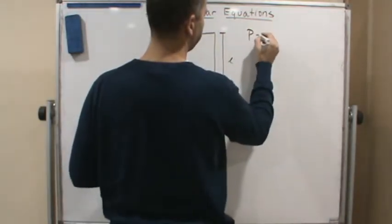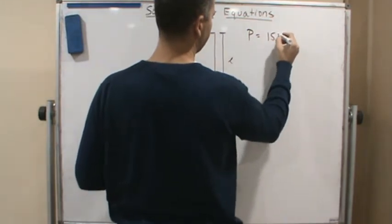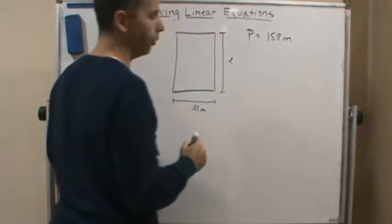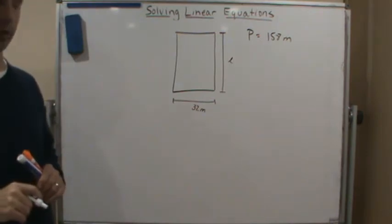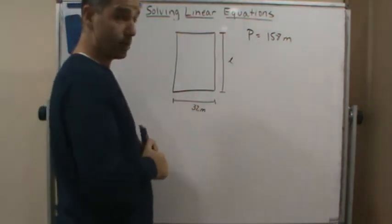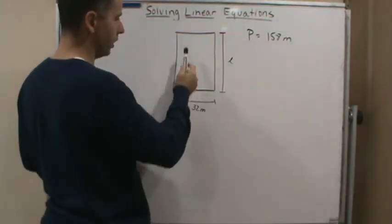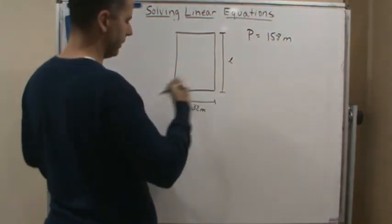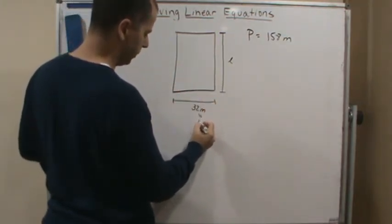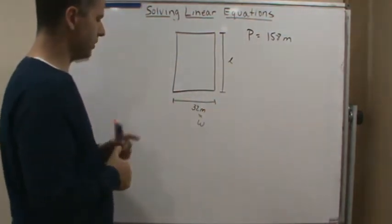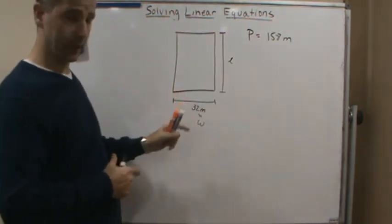So P equals 158 meters. But what is perimeter of a rectangle? Well, it's the distance around, so it's going to be the width, right? So this is equal to W.